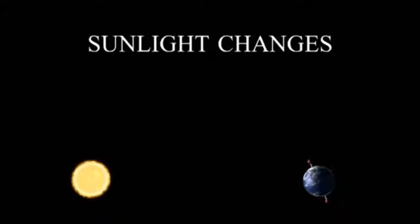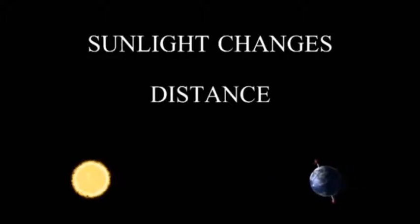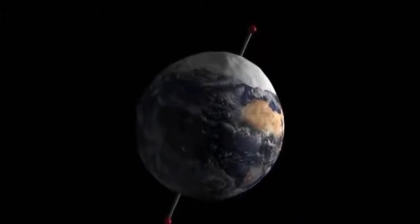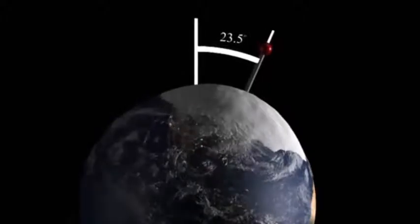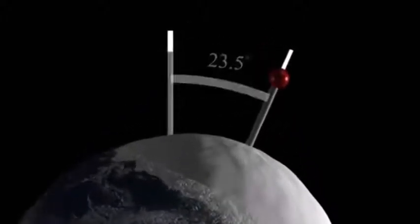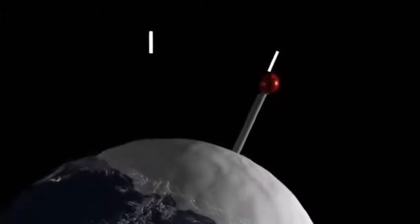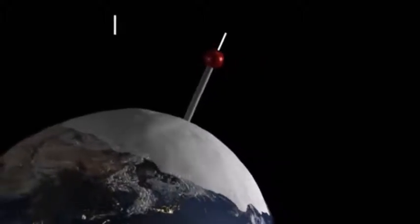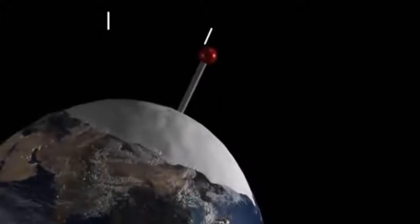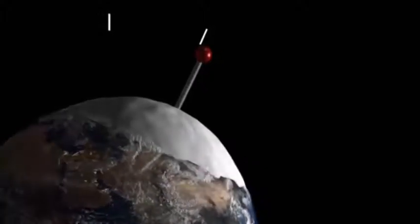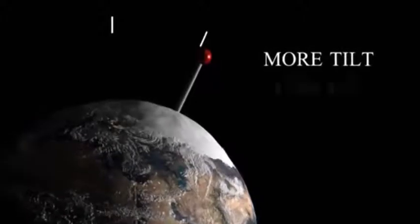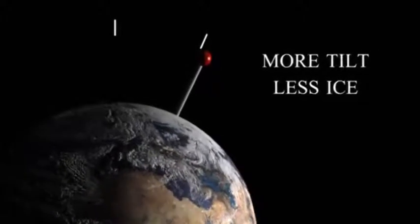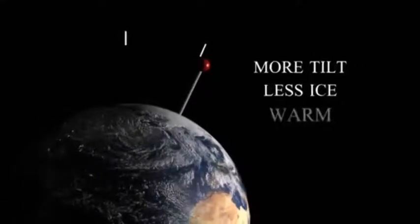How can the amount of summer sunlight be changing? First, the distance from the Earth to the Sun is changing. And second, the Earth's tilt is changing. The Earth's axis is currently tilted at 23.5 degrees, but this changes. Other objects influence the Earth gravitationally, nudging its tilt up and down. Every 41,000 years it cycles up and down. When the Earth is more tilted, there's more sunlight during the summer. More summer sunlight means that more of our ice melts away. With less ice on the ground, less light is reflected away, giving us a warmer climate.